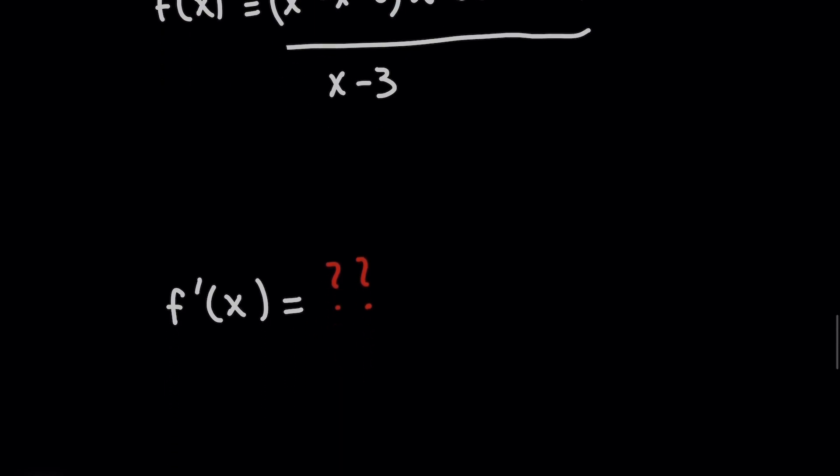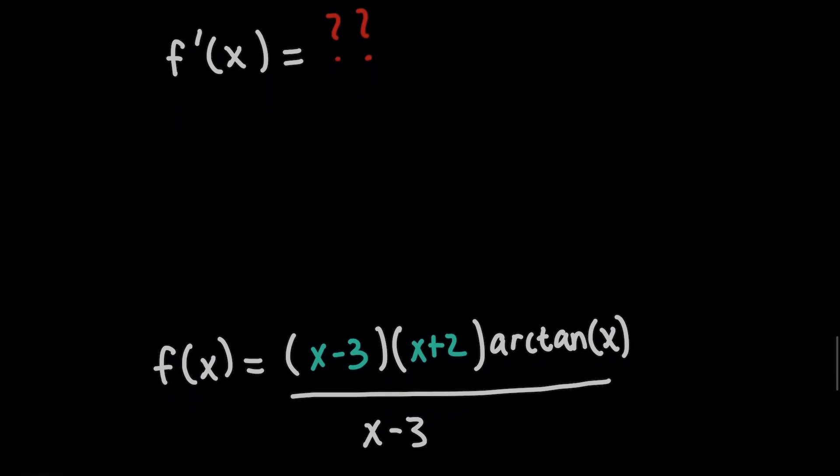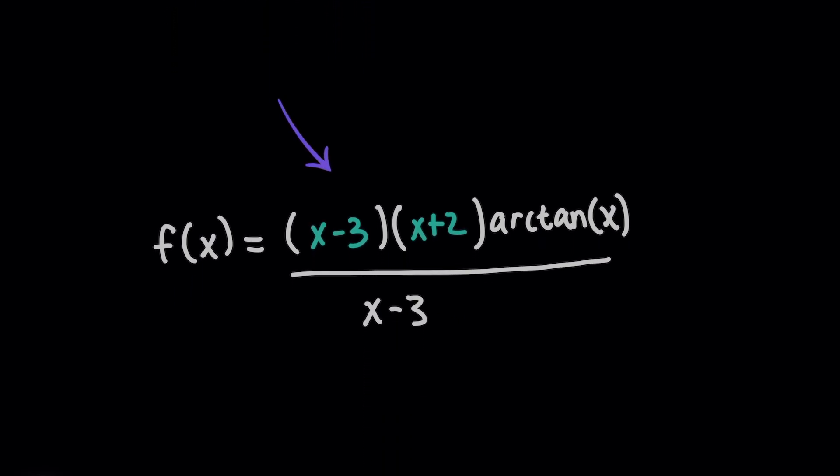what we would want to do first is take f of x and factor the top, where I have x minus 3 times x plus 2 now. Now, the problem here is,